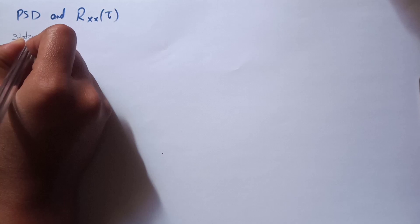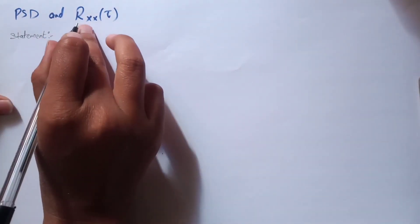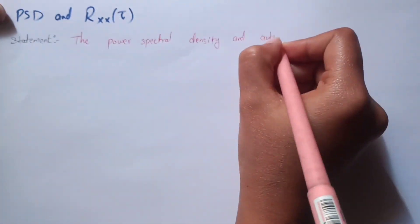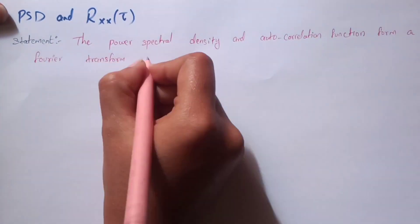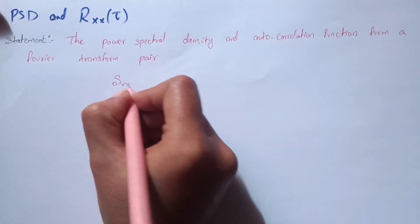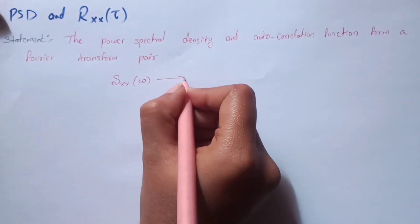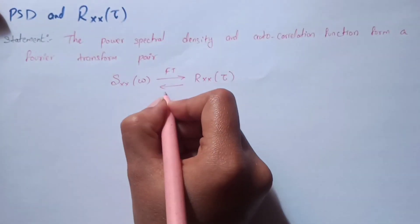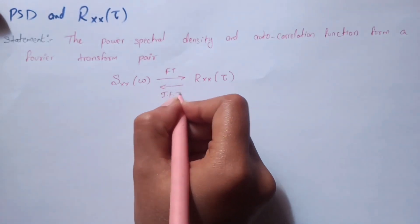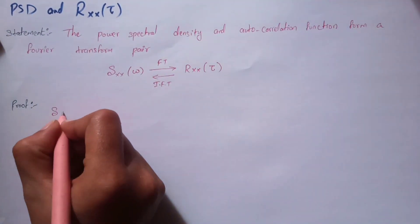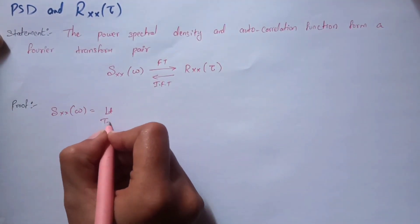Let's start by writing the statement we are going to prove: that PSD and autocorrelation exist as a Fourier transformable pair. The power spectral density and autocorrelation function form a Fourier transformable pair, so it can be written as Sxx(ω) is Fourier transformable to Rxx(τ), and if we take the inverse Fourier transform we get Rxx(τ) back.